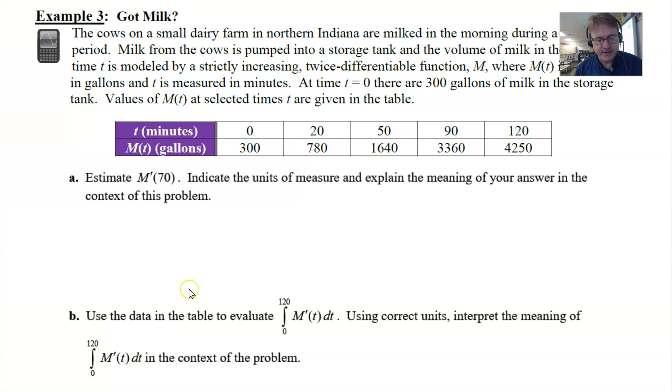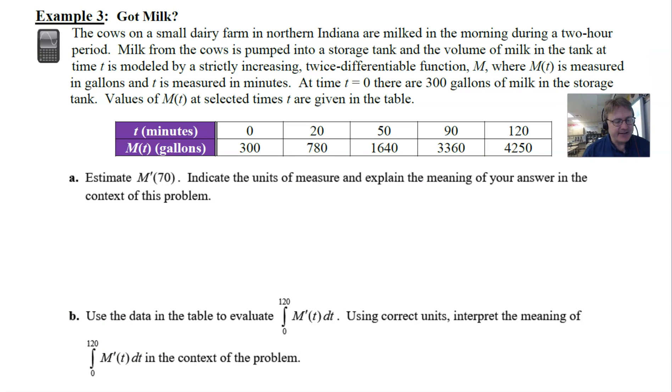So, got milk! Let's see. Cows on a small dairy farm in northern Indiana are milked in the morning during a two-hour period. Milk from the cows is pumped into a storage tank and the volume of milk in the tank at time t is modeled by a strictly increasing twice differentiable function M. M is measured in gallons and t is measured in minutes. At time t equals 0 there are 300 gallons of milk in the storage tank.